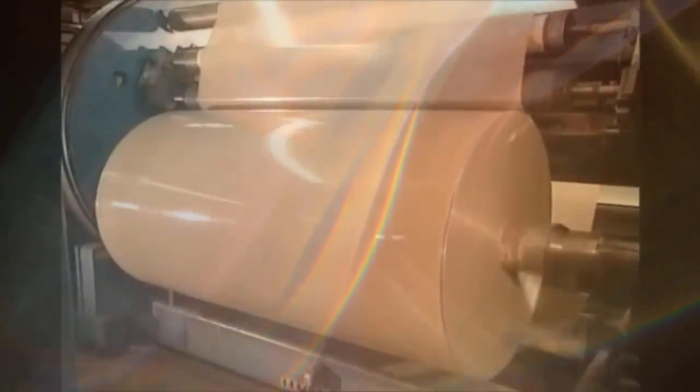Now, a machine called the rewinder rolls the tape onto spools. Remember the unwinder that spliced the rolls together? Well, the rewinder unsplices them.